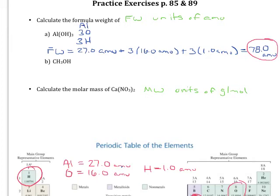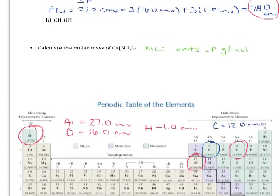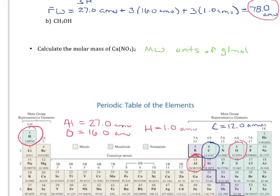I'm going to do something similar with the next one, again using the periodic table. And this time I'm going to be using carbon, hydrogen, and oxygen, and carbon we are going to round to 12.0 atomic mass units. So doing the math up here, if you look, we've got one carbon atom, we have four hydrogen atoms, and one oxygen.